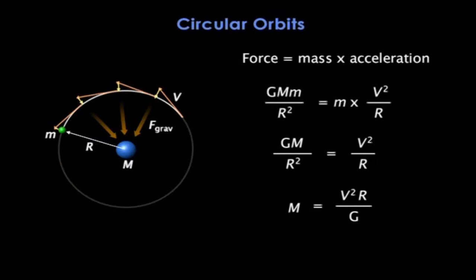Don't worry if you didn't follow all of that. The bottom line is that Newton's simple laws of motion and gravity mean that if you know the size and speed of a circular orbit, you can calculate the mass responsible for making that orbit. This is an amazingly useful formula in astronomy, and I'm going to illustrate with a couple of examples.